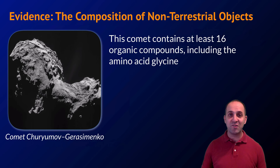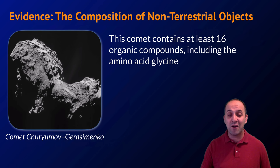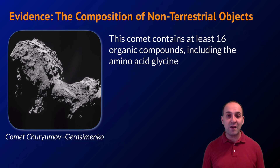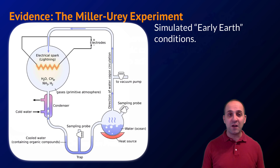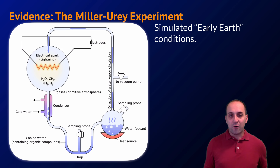There's evidence we don't need to worry too much about the origin of biological molecules. First, the composition of non-terrestrial objects: a comet that has been studied extensively was found to contain at least 16 different organic compounds, including the amino acid glycine. The key point is that you do not need living systems to build these biological molecules — they form spontaneously if conditions are correct.